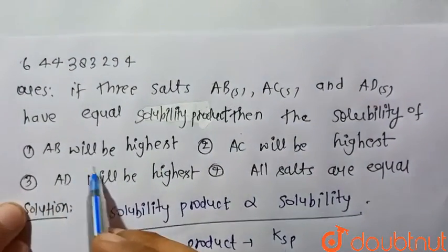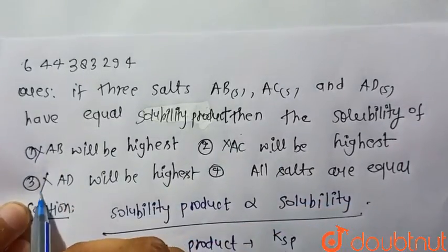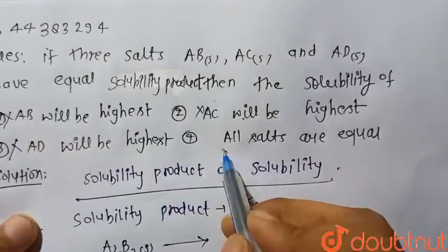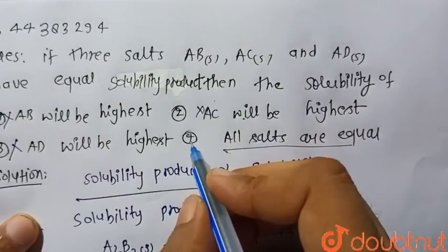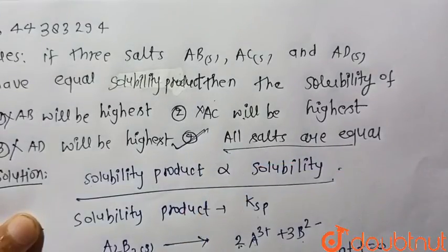So it is given that AB will be higher, this is not correct. AC will be higher, this is also not correct. And AD will be higher, this is also not correct. So all salts will have equal solubility because they have equal solubility product. So option 4 is the correct choice. Thank you.